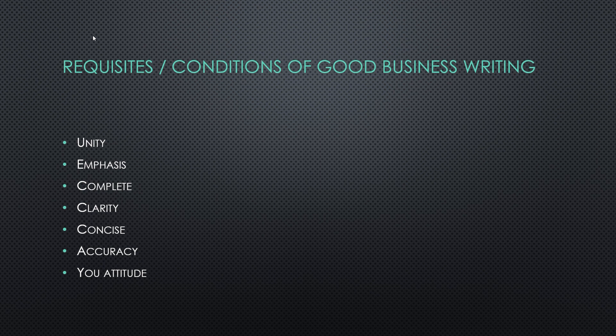Next is clarity — the message should be free from ambiguities and confusion, and the writer should think clearly and in a logical sense. Next is conciseness — the written message should convey the message with the minimum possible words without sacrificing completeness and clarity. Next is accuracy — the message should be expressed with accurate facts and in correct language, as reporting of inaccurate facts and figures may mislead the reader leading to wrong decisions.